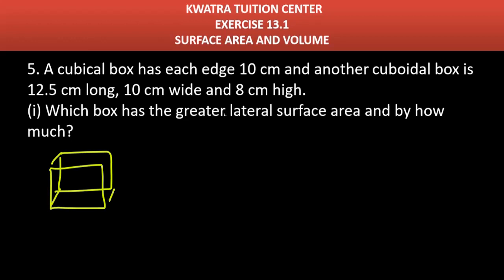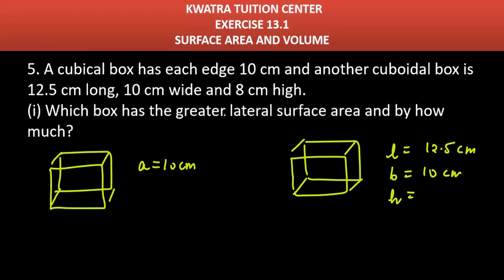And after that we have another box that is cuboidal in nature. Cuboidal means it's basically a cuboid having length, breadth and height. Three things we have mentioned here - you can see a = 10 cm in this case. We have length, breadth and height: length is 12.5 cm, breadth is 10 cm, height is 8 cm.